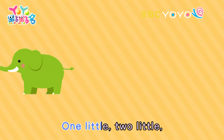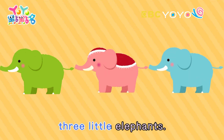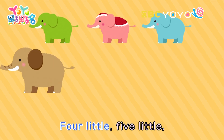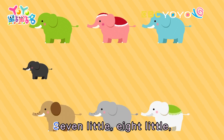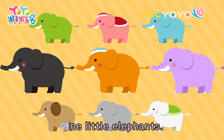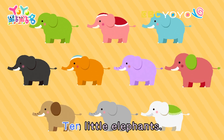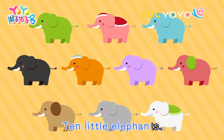One little, two little, three little elephants. Four little, five little, six little elephants. Seven little, eight little, nine little elephants. Ten little elephants.